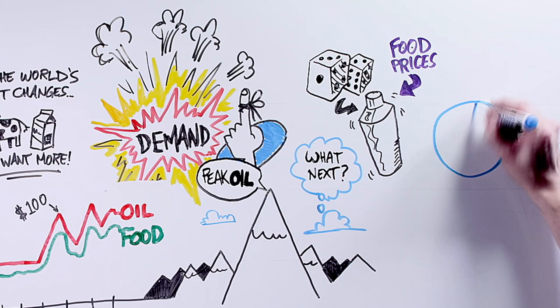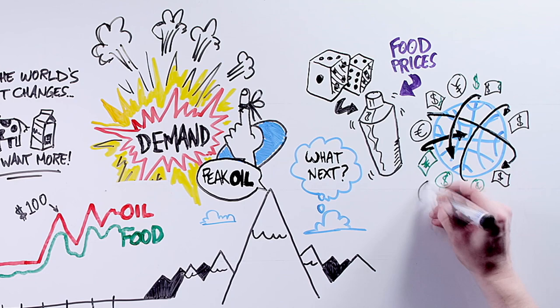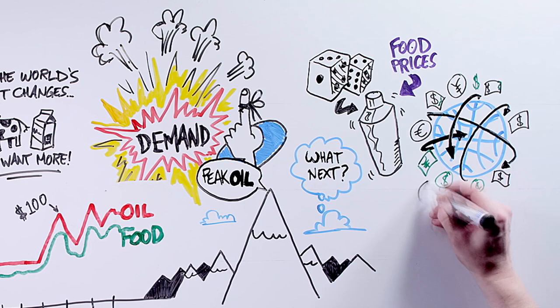One final bit of the equation is gambling. This is where the frothy response to the global financial crisis mixes with the fundamental trajectory of food prices. All around the world, central banks in the US, in Europe and in China are printing money as if it's going out of fashion. And all this money has to go somewhere.